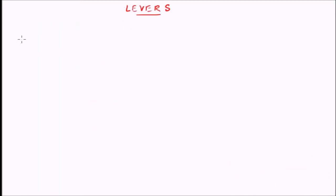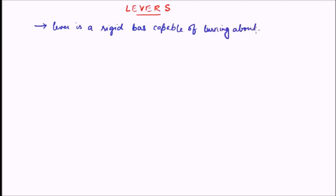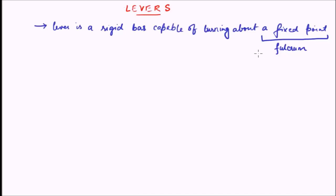Livers are one of the simplest machines which we use in our day to day activity. In simple terms, liver is a rigid bar which is capable of turning about a fixed point. So the definition is: liver is a rigid bar capable of turning about a fixed point. Now this fixed point is termed as the fulcrum of the liver. The fixed point does not change its position — it stays at a point and above this point the bar turns. One very simple example which you must have seen as a child is a seesaw.